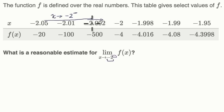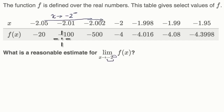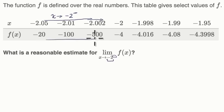So it would be reasonable — and we don't know for sure, this is just giving us a few sample points for this function — but if we follow this trend, as we get closer and closer to negative two without getting there, it looks like this is getting unbounded. It looks like it's becoming infinitely negative.